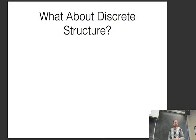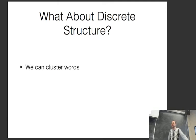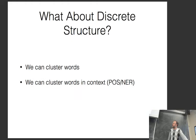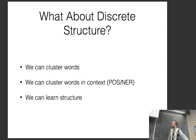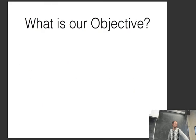What kinds of discrete structure can we induce? We can cluster words together, cluster words in context — which is the basic idea behind part-of-speech tagging or named entity recognition — or learn structure like parse trees. I'll talk about all of these.